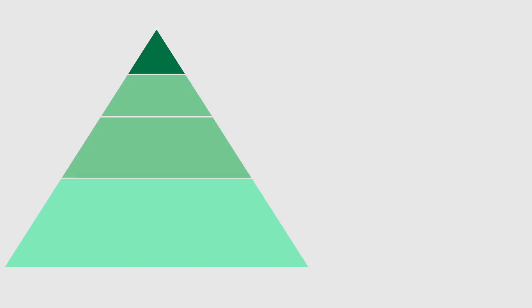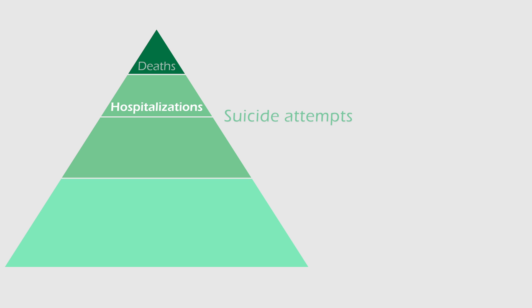Death certificates are available but they only give you a small piece of the picture. We talk about something called a pyramid — the very tip of the pyramid represents deaths. Below that, you have hospitalizations due to suicidal behavior, which represents more serious suicide attempts. Then you have emergency department visits due to suicide attempts, which is an even bigger number.